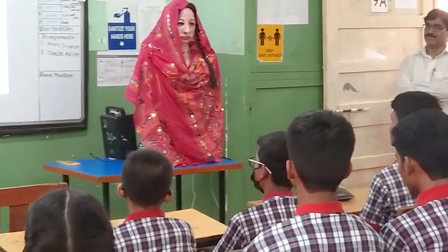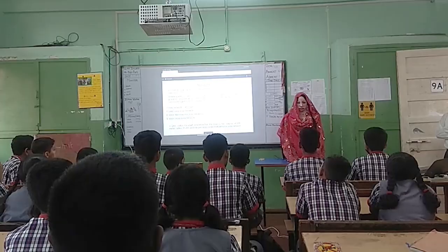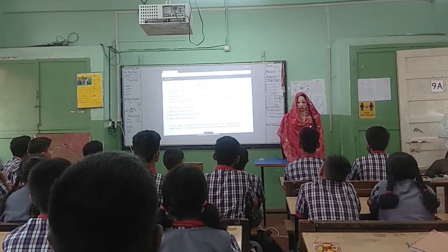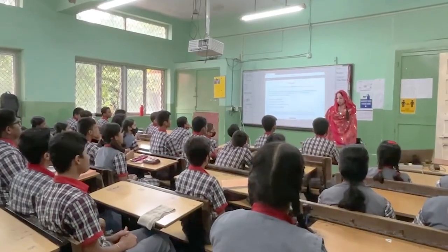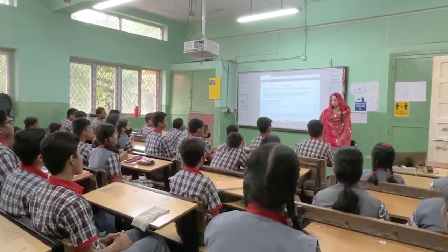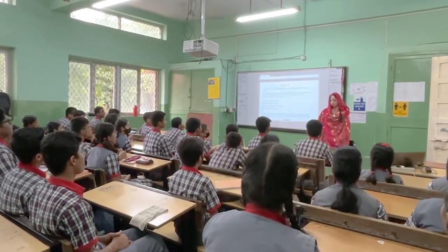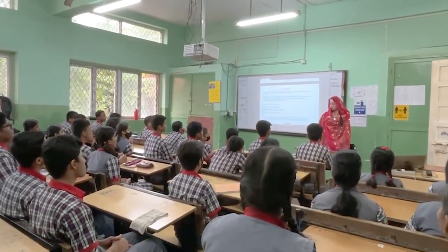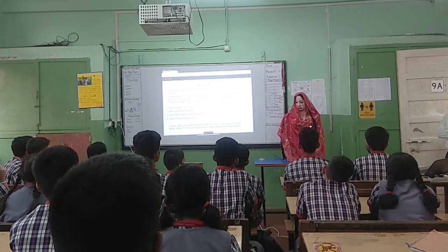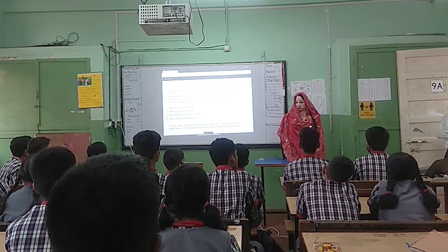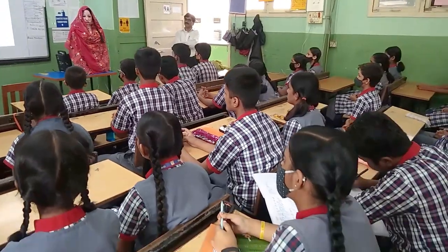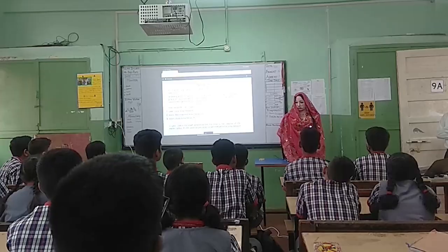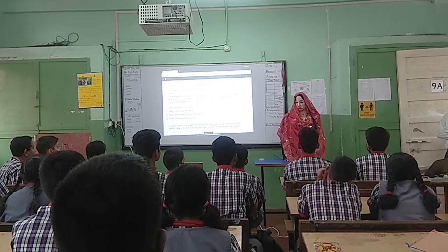It's simple — a network is a group of interconnected autonomous computers or smart devices. Now you can ask what autonomous means. Anything which is capable to take a decision itself is called autonomous. So, the group of computers which are connected together forms a network.